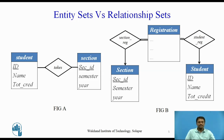Registration is the entity set representing course registration records. Section_registration is the relationship set relating registration and section. Student_registration is the relationship set relating registration and student. Note that we use double lines to indicate total participation by registration entities. Both approaches — figure A and figure B — accurately represent the university's information, but the use of takes is more compact and probably preferable. However, if the registrar's office associated other information with a course registration record, it might be best to make it an entity in its own right. One possible guideline is to designate a relationship set to describe an action that occurs between entities; this can also help decide whether certain attributes may be more appropriately expressed as relationships.